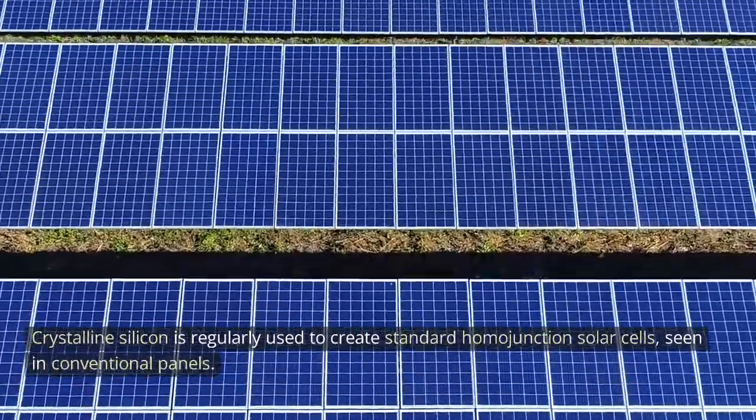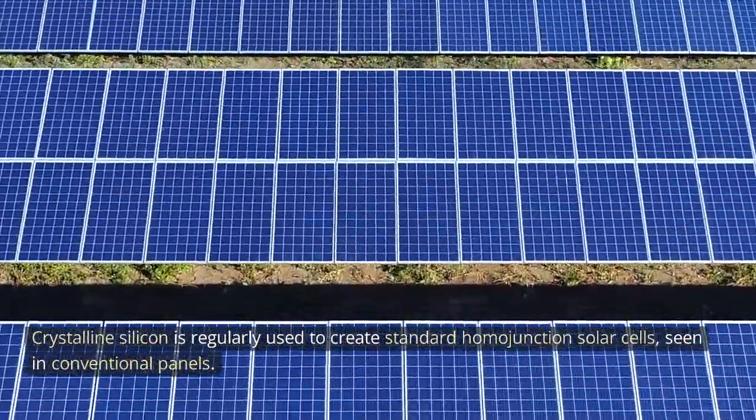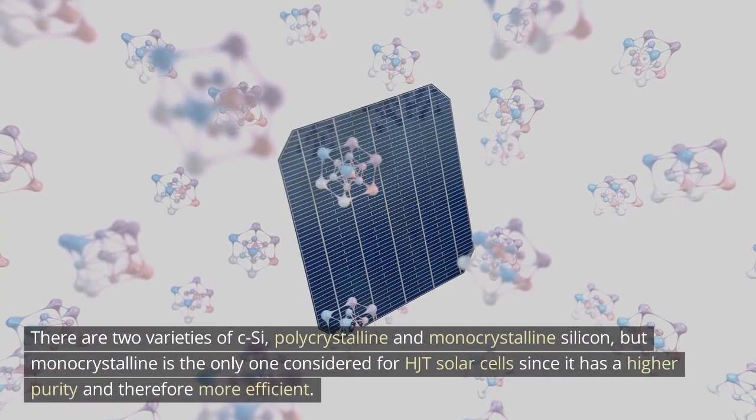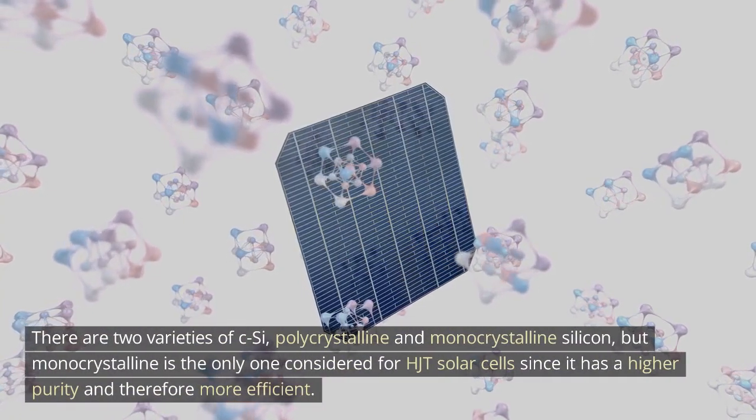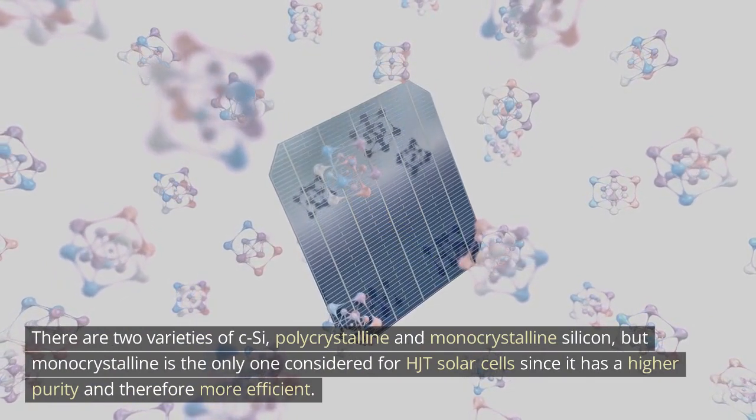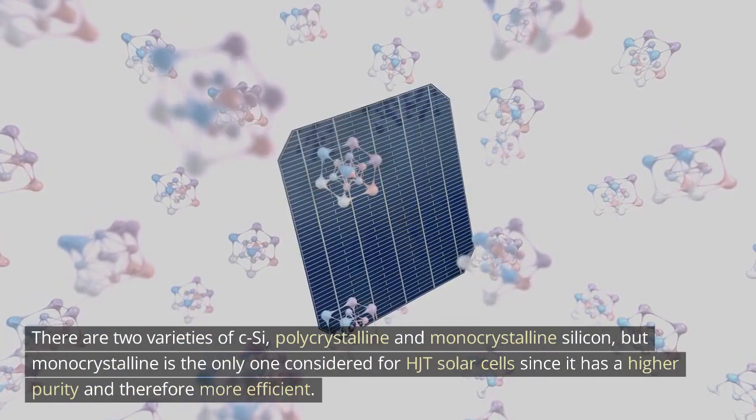Crystalline silicon is regularly used to create standard homojunction solar cells seen in conventional panels. There are two varieties of c-Si: polycrystalline and monocrystalline silicon, but monocrystalline is the only one considered for HJT solar cells since it has a higher purity and therefore more efficient.